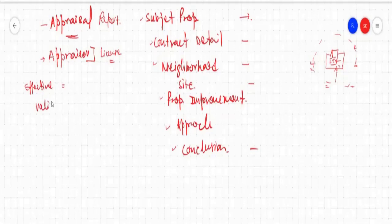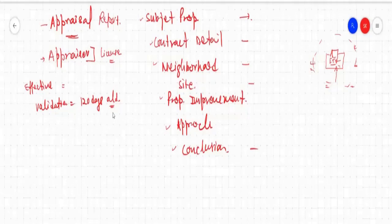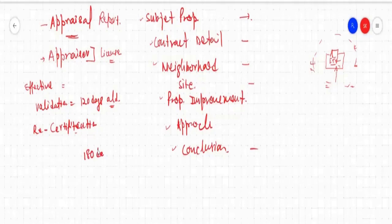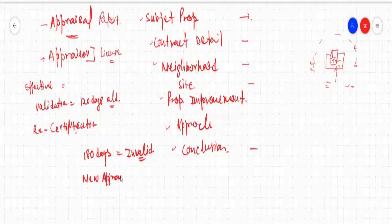Validation for appraisal is a different thing. Whenever we have an appraisal greater than 120 days old from the application date, if it is more than 120 days old, we need a recertification. We do not need the entire document again — just someone who can certify that everything written in it is still valid. And if it is more than 180 days old, then it becomes invalid, and in that case we need a new appraisal. So it is valid only for 6 months or 180 days.